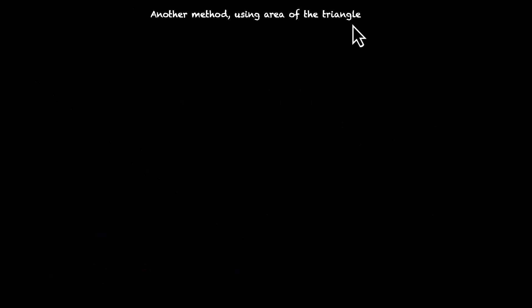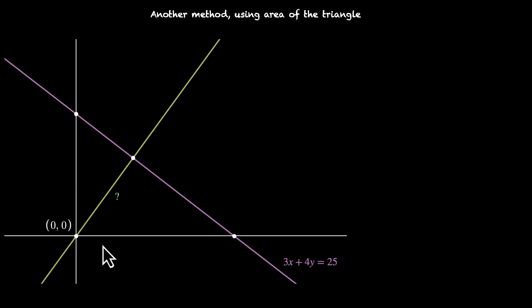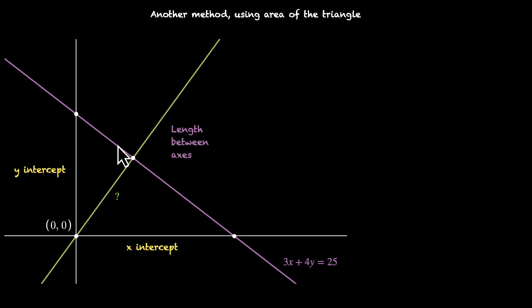There's one more method that we discussed — this one involves triangles. We're looking at the triangle between the axes: the triangle with sides x-intercept, y-intercept, and the length between the axis points. We find the area of this triangle first by using the intercepts, and then by using the perpendicular distance and the length between the axis intercepts.